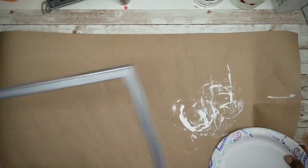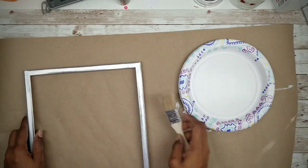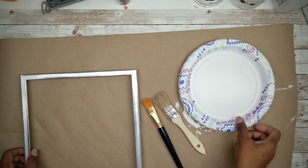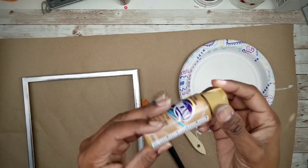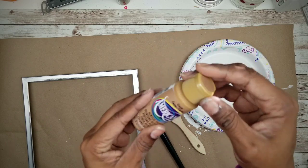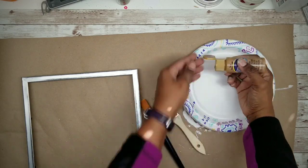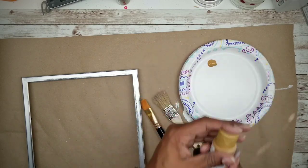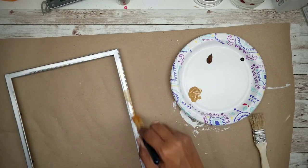Go ahead and protect your surface and gather up your paint supplies. Now for a base coat, we'll be using this brown mustard color acrylic paint. What you want to do is apply two coats to the frame and let it dry.